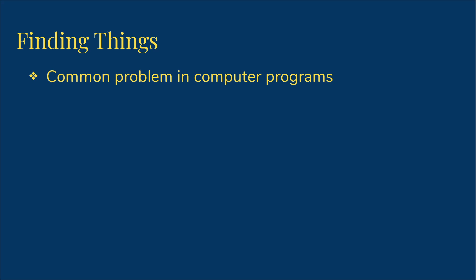Finding things is a common problem in computer programs. I have a bunch of bank accounts and I need to deposit money into one of them, so first I have to find the one that the money is supposed to go into. I need to change a student's major, so first I have to find that particular student. The technical term used by computer scientists for this problem is search.